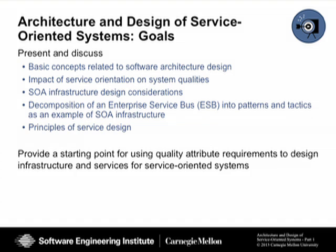The second part of this presentation will be next week. We will talk about SOA infrastructure design considerations, decompose the enterprise service bus into patterns and tactics, and then talk about principles of service design. In the end, what we want to do is provide a starting point to start looking at quality attributes as a way to design infrastructure and services for service-oriented systems. There is the content of the tutorial — today is Part 1, and let's get started.